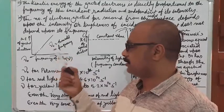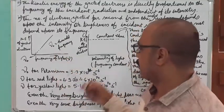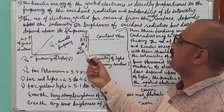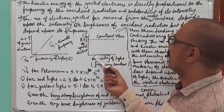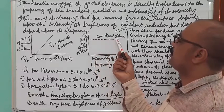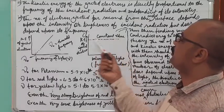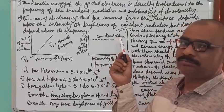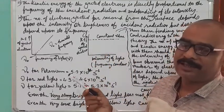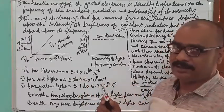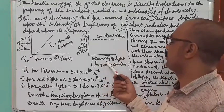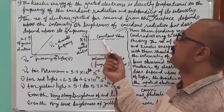This straight-line graph proves there is a direct relation between frequency and kinetic energy. In the second graph, plotted between intensity of light and kinetic energy of ejected electrons, as intensity increases there is no change in kinetic energy — it remains constant. Whatever electrons come out of the metal surface all have the same kinetic energy, even though you are increasing the brightness. These two graphs confirm both the third and fourth experimental points.